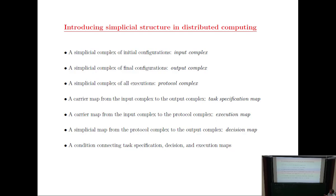Similar to what Professor Levy was talking about yesterday with their categorical model, here you make some model, take in some structure — the coloring, maps that respect it — imposing restrictions that are natural from the distributed computing side. The results depend on these additional conditions. This is a rough roadmap of how you go from distributed computing to a purely simplicial picture of simplicial complexes, simplicial maps, and carrier maps.